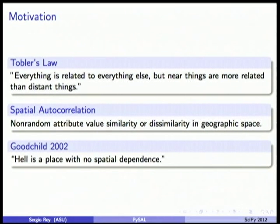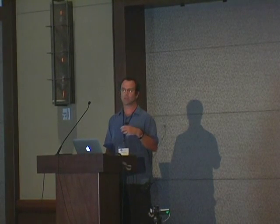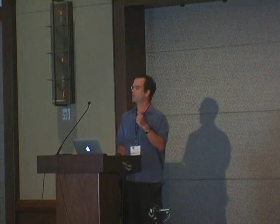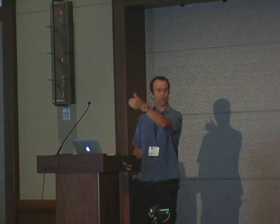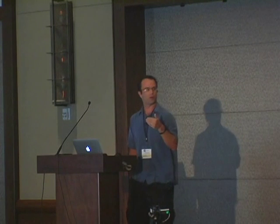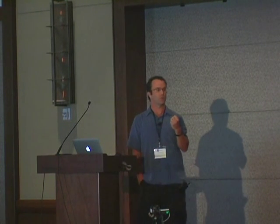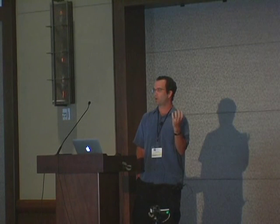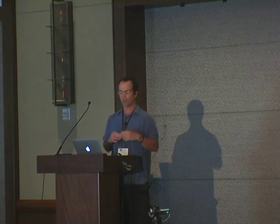Spatial correlation causes problems but also offers opportunities. Similar to time series, dependence is crucial for making inferences and predictions. In space, however, it tends to be a lot more complex. In a time context, causality is recursive — January's first-order lag is December. But in space, you can have multi-directional, non-recursive, and simultaneous dependencies. These types of spatial interactions give rise to spatial dependence.